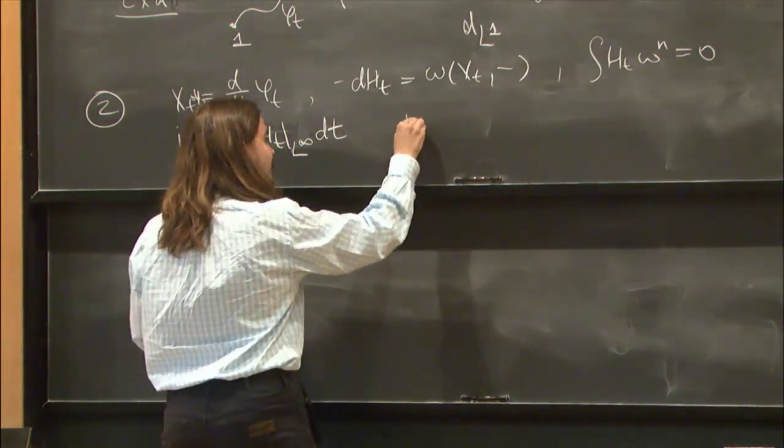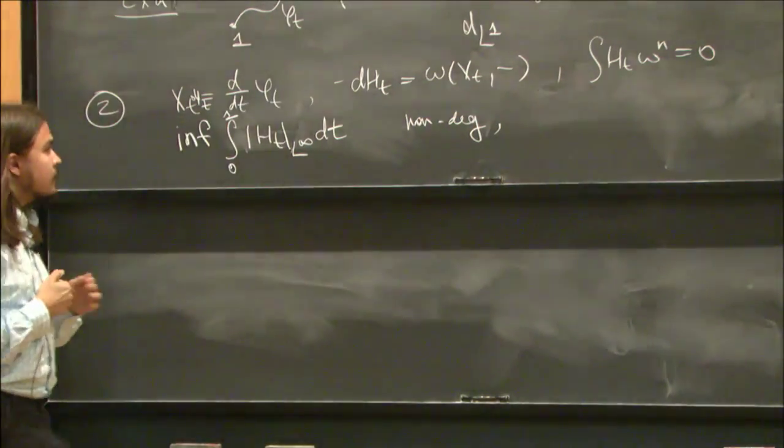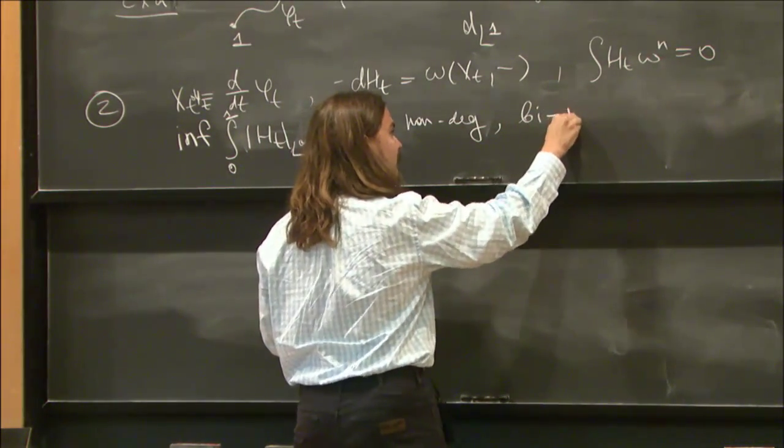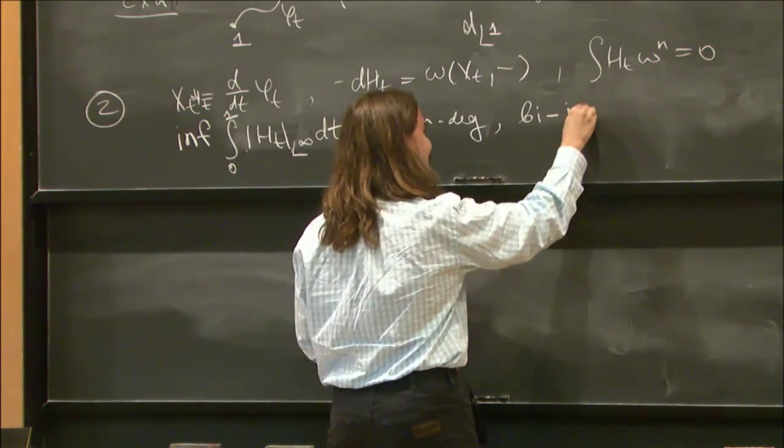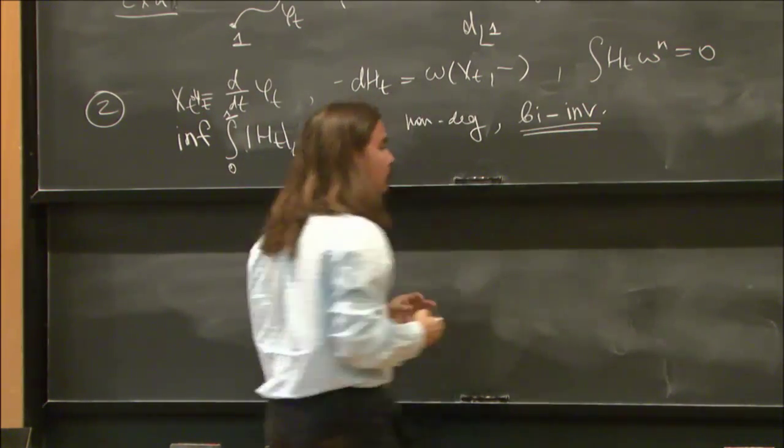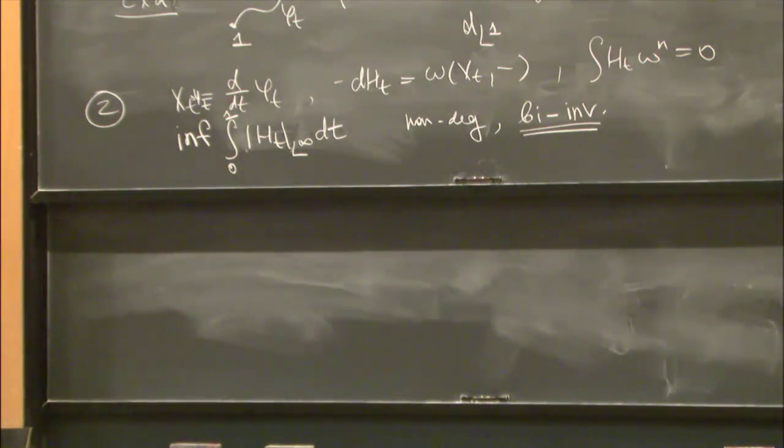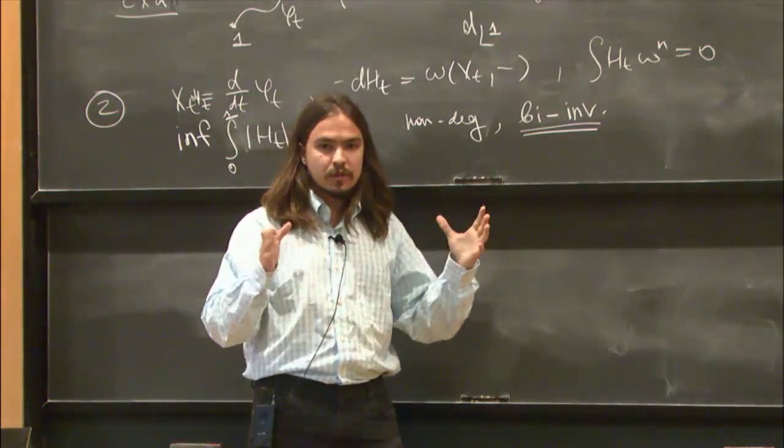This is a non-degenerate metric, and it is not only right invariant but also left invariant. So it is a bi-invariant norm, which means that this is very intrinsic somehow. The non-degeneracy is roughly equivalent to Gromov's famous non-squeezing theorem.